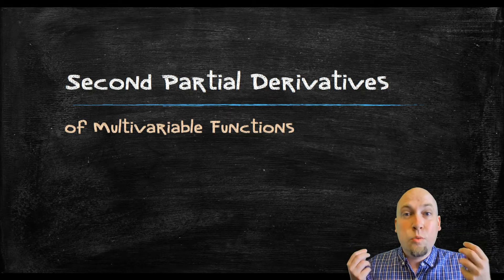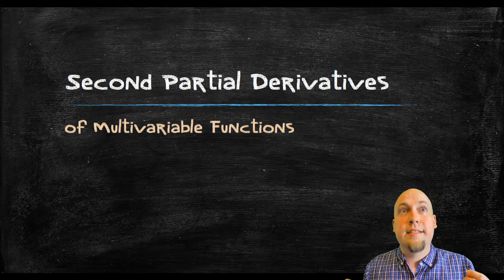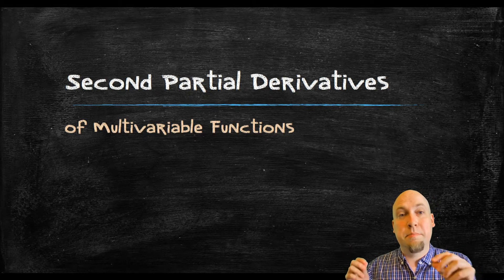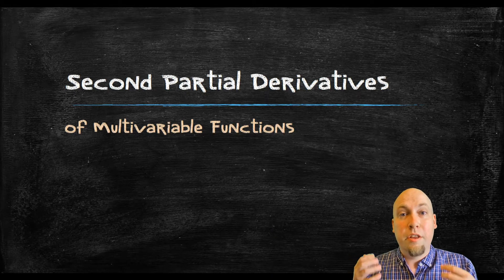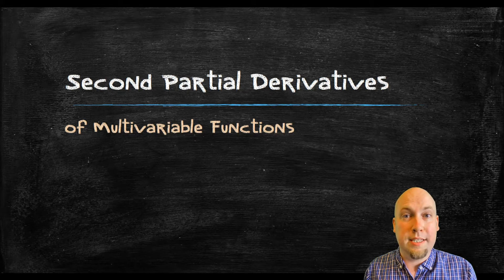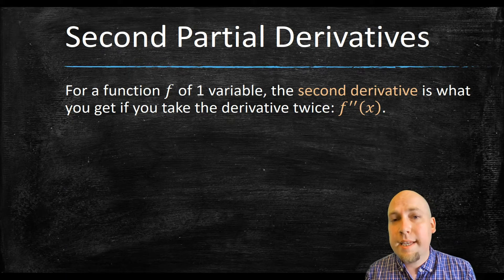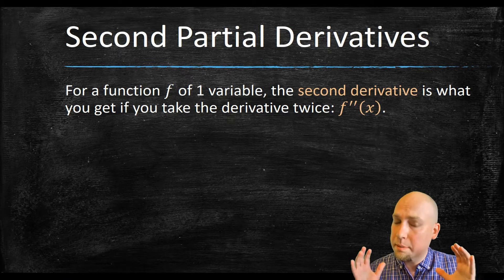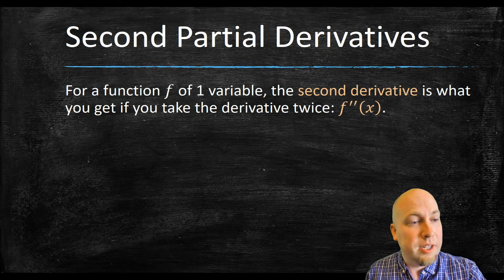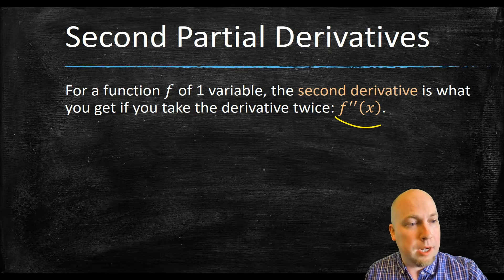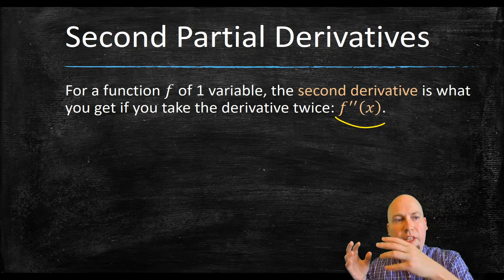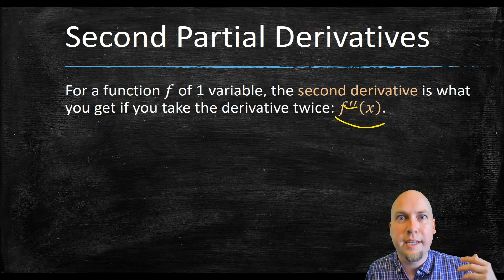It's okay to mix and match as well. The reason we're going to look at these is that second partial derivatives are useful for classifying critical points as either maximums, minimums, or saddles — the three types of critical points that exist for functions of two or more variables. These second partial derivatives generalize the second derivative of a single variable function very naturally. For a function of just one variable, the second derivative, denoted f'' or f double prime, means you took the derivative and then took the derivative of that — you just took the derivative twice.